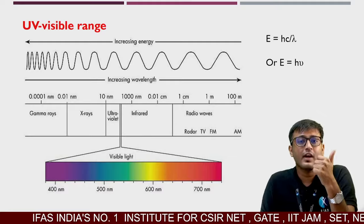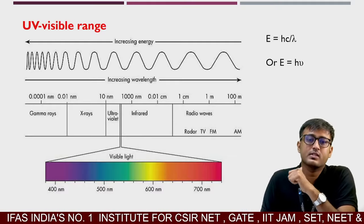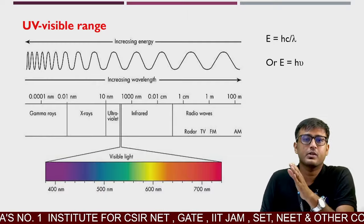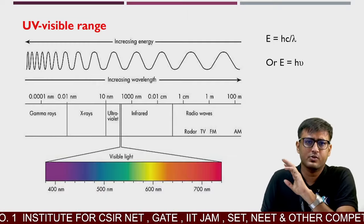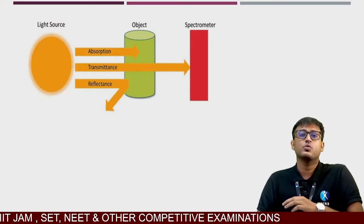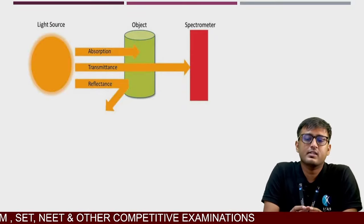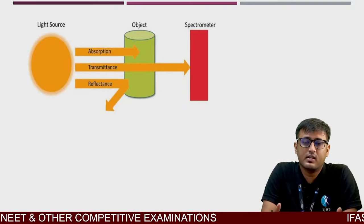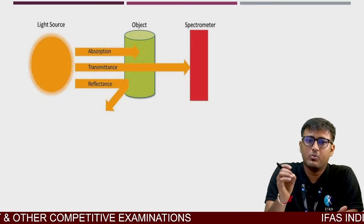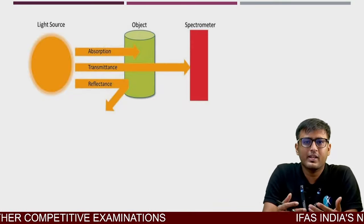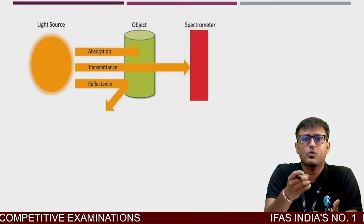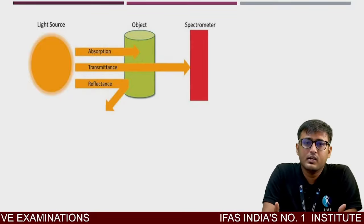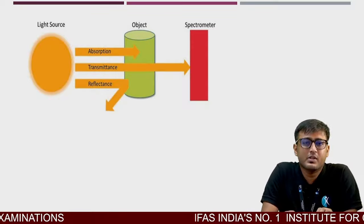UV range ki energy zyada hai because uski frequency zyada hai, compared to the visible range ya phir IR range. UV visible range jo hai, it is enough to cause electronic transitions in the molecule or atom of the sample. Electronic transitions hote rahe hai, woh koi particular energy absorb karega, kuch electronic transitions honge, and finally wohi absorbance ko measure karenge.